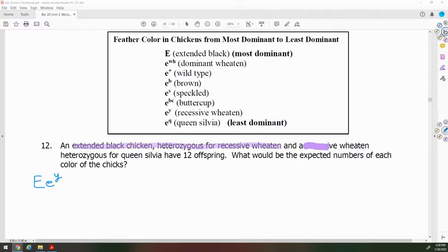The other parent is recessive wheaton, heterozygous for queen sylvia. So the first allele is EY, and the next one is EQ.